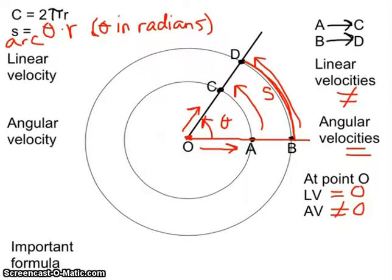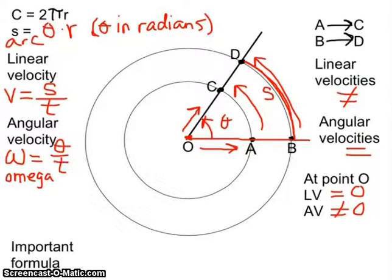Now, to calculate linear velocity, linear velocity is calculated as change in distance over change in time. Well, the distance in this case would be S over time T. The angular velocity, which is labeled omega—this is a Greek letter, not a W with a little curve in it—omega is the change in angle over the change in time, or theta over T.